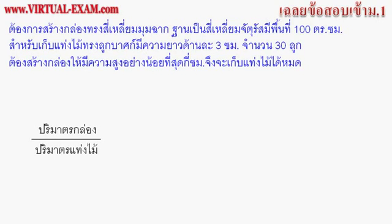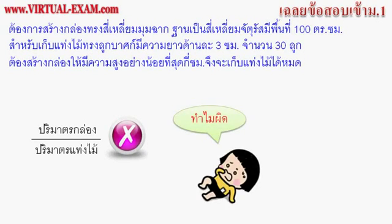โจทย์เกี่ยวกับการนำสิ่งของไปเก็บในภาชนะ ถามว่าเก็บสิ่งของได้เท่าไหร่หรือภาชนะมีขนาดเท่าไหร่ สามารถหาคำตอบได้โดยนำปริมาตรของภาชนะหารด้วยปริมาตรของสิ่งของ แต่สูตรนี้ไม่สามารถใช้ได้กับทุกข้อ โจทย์ข้อนี้ถ้านักเรียนหาความสูงของกล่องโดยนำปริมาตรของแท่งไม้ไปหารปริมาตรของกล่อง คำตอบที่ได้จะเป็นคำตอบที่ผิด (For problems about storing items in a container, you might use container volume divided by item volume — but this formula does not work for every problem. For this question, using that method will give the wrong answer.)